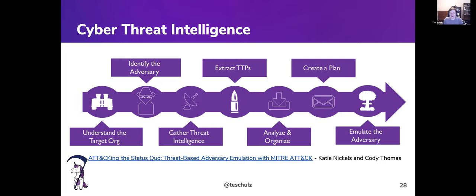Each industry has different regulations and security stacks, meaning adversary tooling that works well against one organization likely works against another in the same sector. Once you've identified your sector, identify a specific adversary — for example, the FIN actors were named because they target financial industries — look for public reporting, and pull out those TTPs.